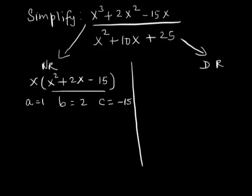Since a is 1, all we need to do is find two integers that multiply to give c, which is negative 15, and add up to give b, which is 2.